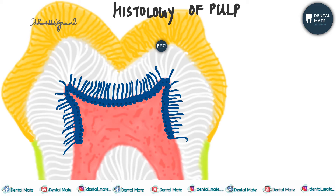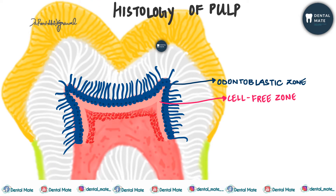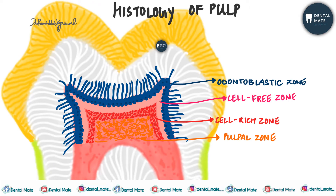The four zones from outermost to innermost are: first, the odontoblastic zone; next, the cell-free zone; thereafter, the cell-rich zone; and last, the pulpal zone. You can remember it as: odontoblastic is outermost, then free, rich, and pulp — outer, free, rich, pulp.